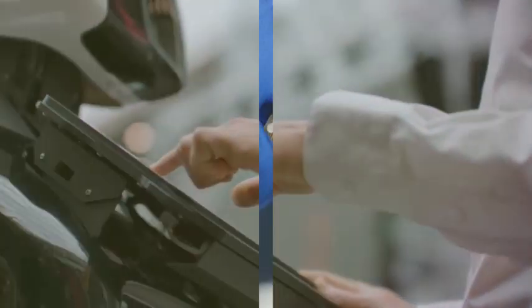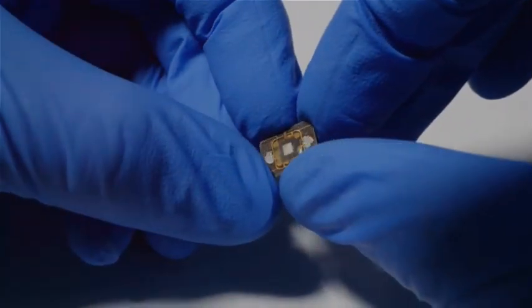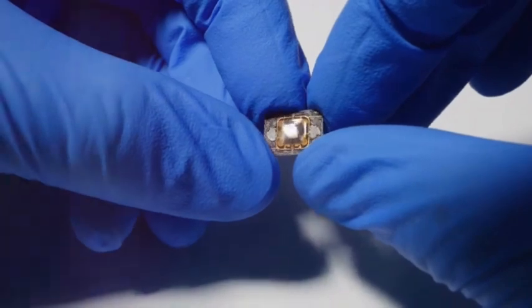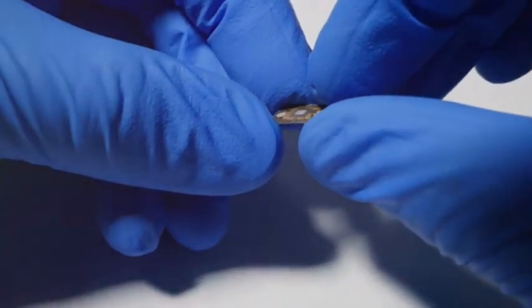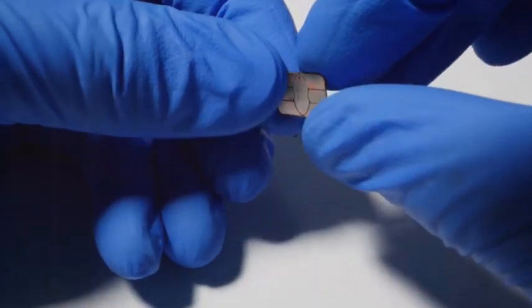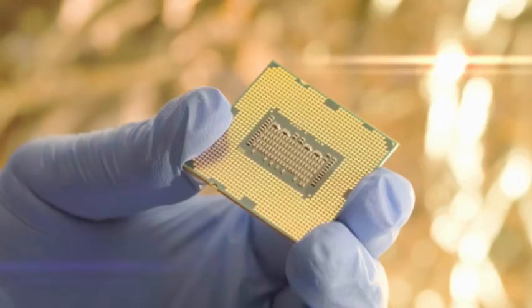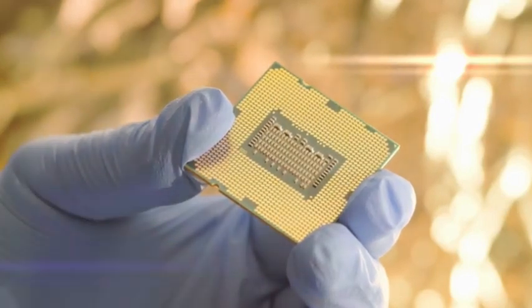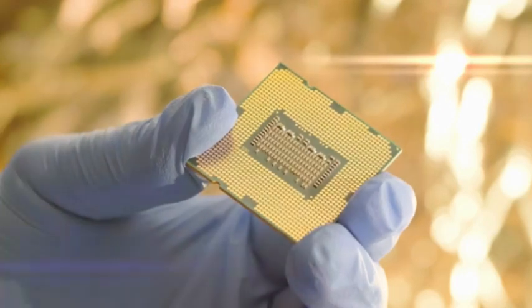In its relatively short existence, Neuralink has already reached some significant milestones. First, let's talk about the development of the N1 chip. This tiny device, about the size of a coin, is designed to be implanted directly into the human brain. It's packed with over a thousand electrodes and has the ability to both read and write brain activity.